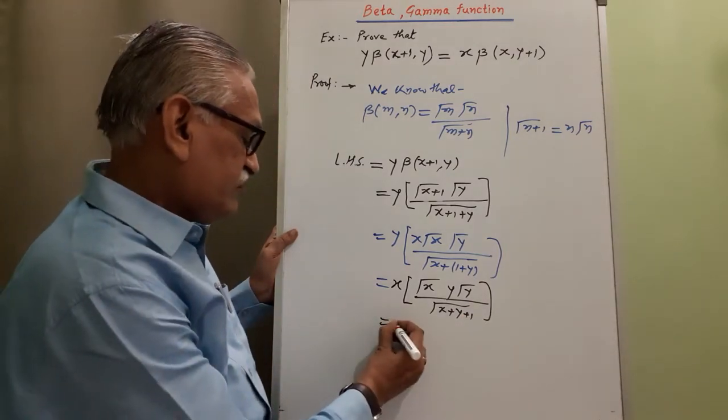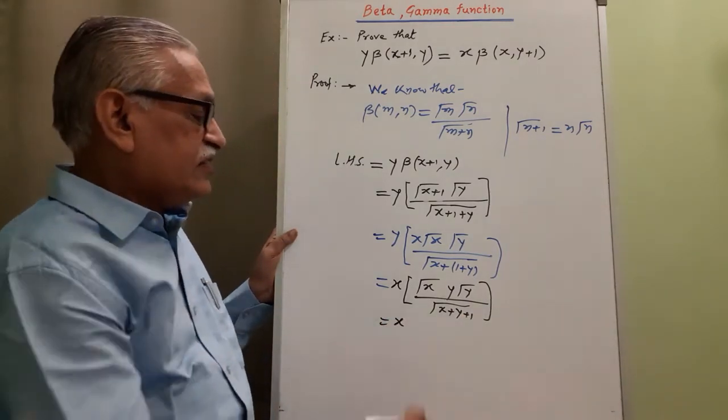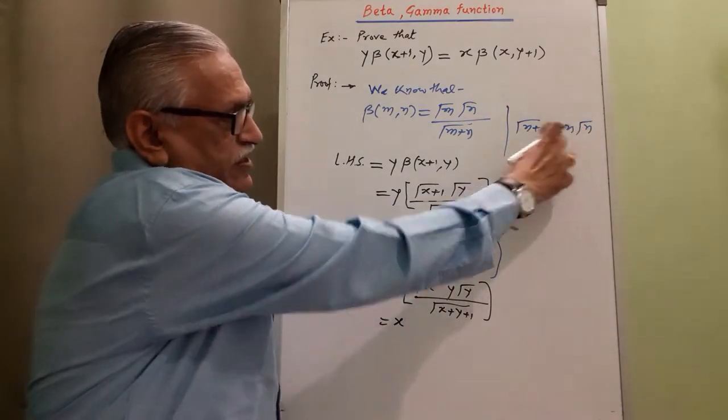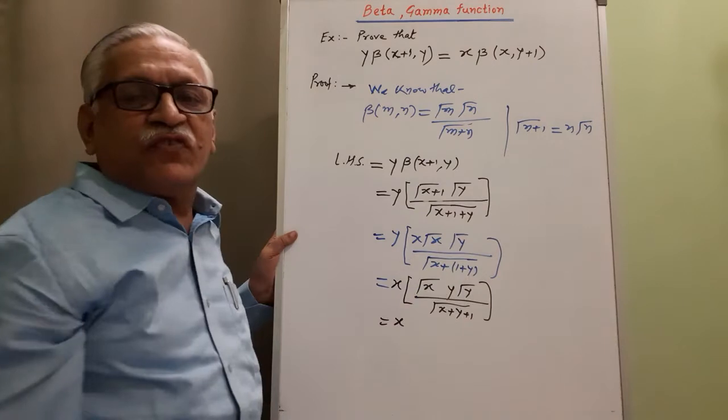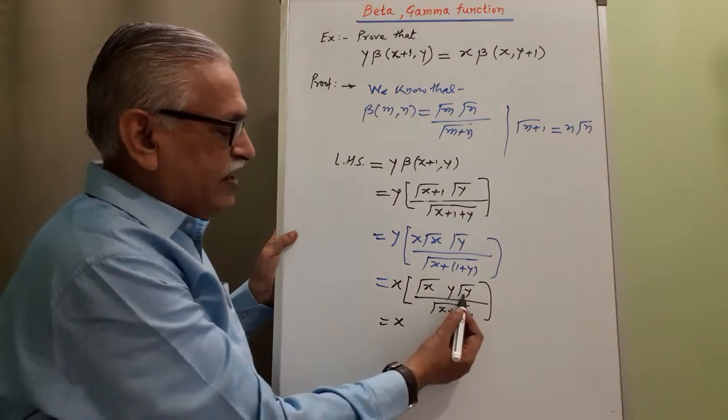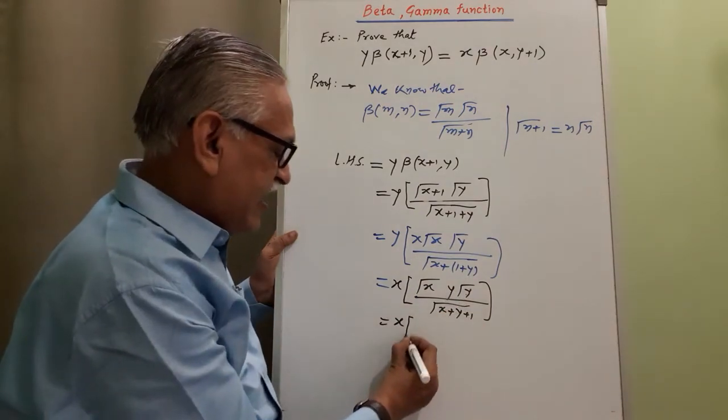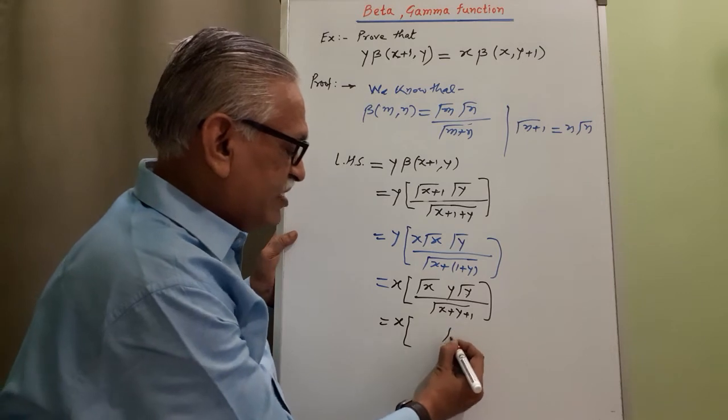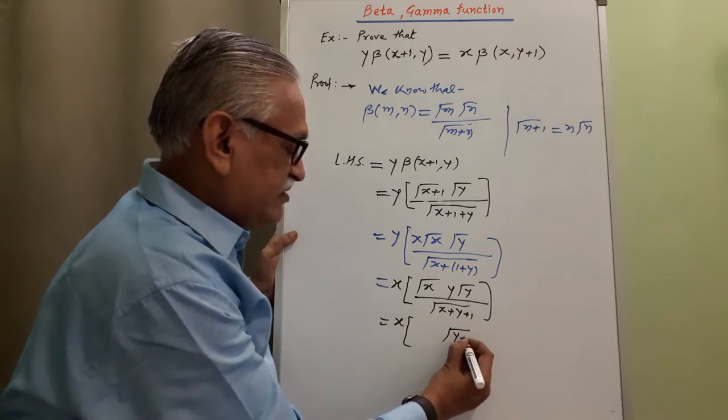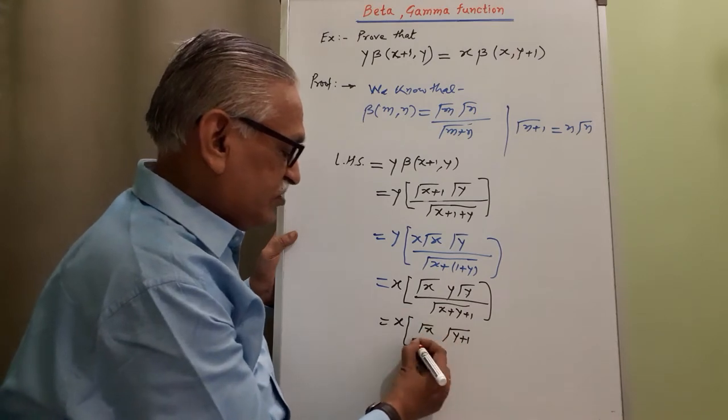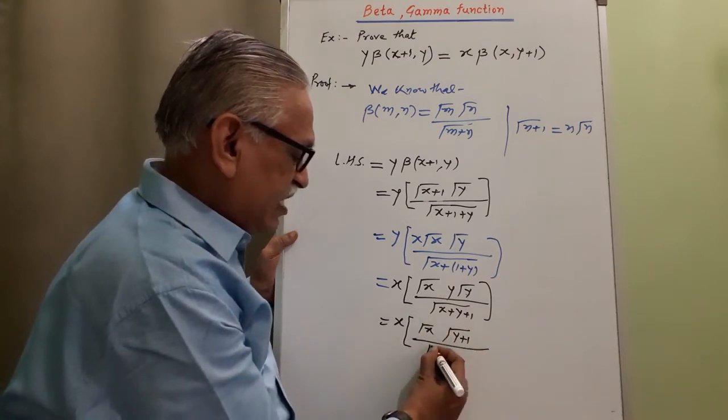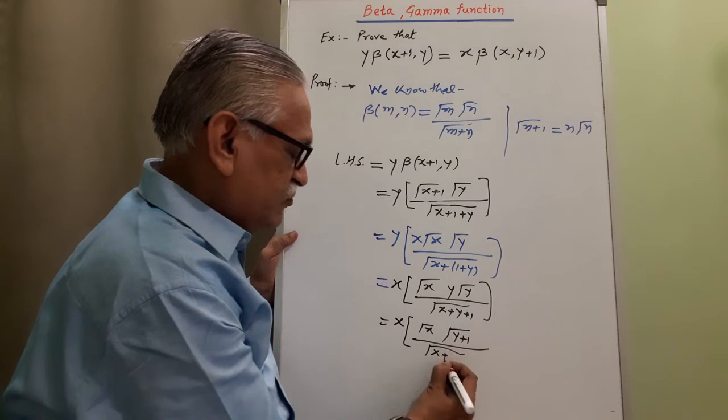And that is equals to X as it is. Because we use this property in reverse direction also, N gamma N is gamma N plus 1. And therefore, this Y gamma Y, I can rewrite as gamma Y plus 1. This gamma X as it is, no change, divided by gamma X plus Y plus 1.